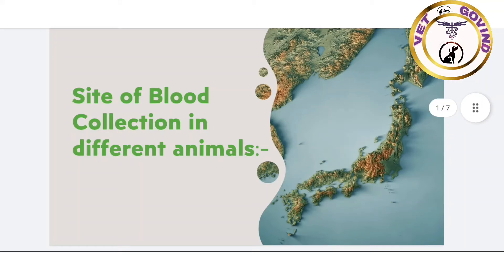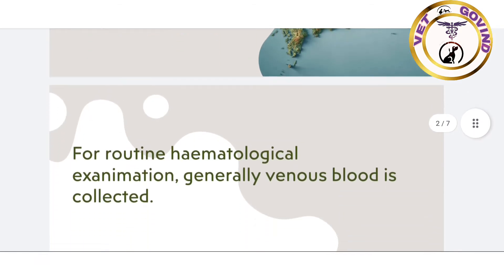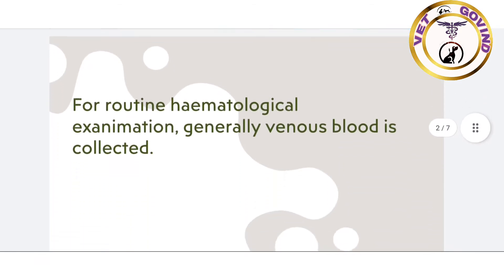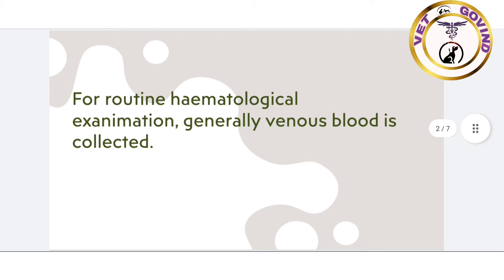Hello friends, today I will discuss the site of blood collection — blood sample collection from different animals. In different animals there is a different site of blood collection. Let us start and watch the full video. For routine hematological examination, generally venous blood is collected.